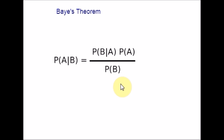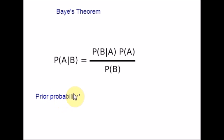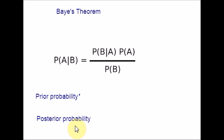First, let us see what is meant by prior probability. Prior probability is an initial probability value that is originally obtained before any additional information is obtained. Posterior probability is a probability value that has been revised after using additional information. So this is the later obtained information, and prior is the information which we have initially.